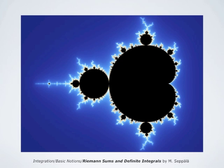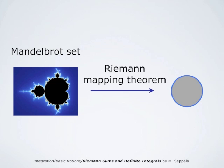Riemann studied sets which are simply connected in the sense that there are no holes in the sets and that one can walk from any point of the set to any other point just along points in the set. Here is a rather strange simply connected set — the so-called Mandelbrot set. Riemann did not know of Mandelbrot sets; they were invented much later, but Riemann studied such simply connected sets in general. His extraordinary invention was to show that such sets can be mapped conformally onto the unit disk, with some simple exceptions. These conformal mappings preserve angles and have important applications in many areas of practical study. Riemann's contributions to mathematics were indeed extraordinary.